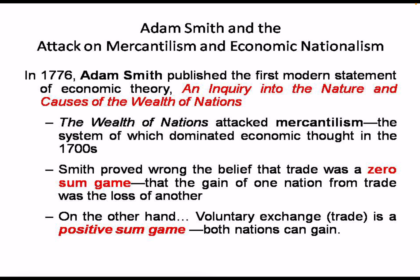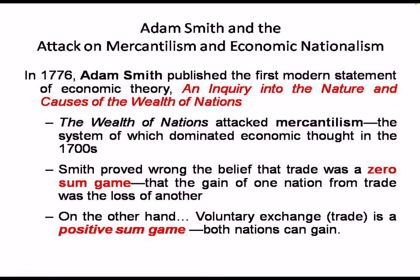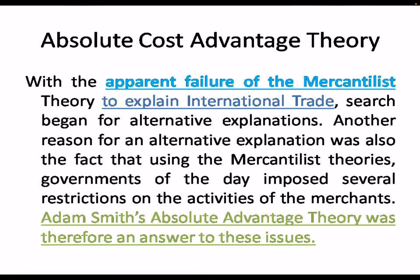Smith proved that trade was not a zero-sum game but a positive-sum game, in which both nations gain, rather than one country losing and the other winning. This is also a key exam point: according to Adam Smith, trade is a positive-sum game. Absolute cost advantage was developed because of the failure of mercantilist theory to explain international trade, offering an alternative explanation.